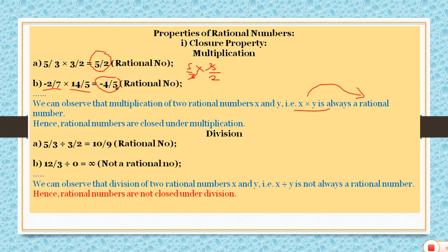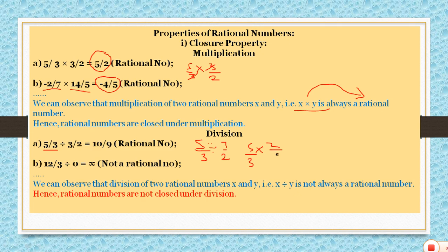Now let's see division. When we divide x and y, let's check if the result is always rational. Dividing 5 by 3 by 3 by 2: we change the division to multiplication and take the reciprocal of 3 by 2 to get 2 by 3. The answer is 10 by 9, which is a rational number.